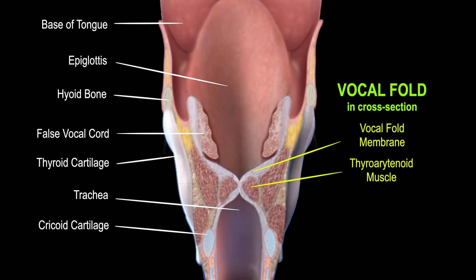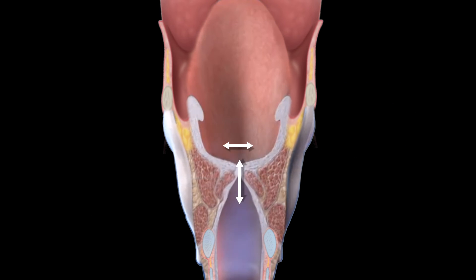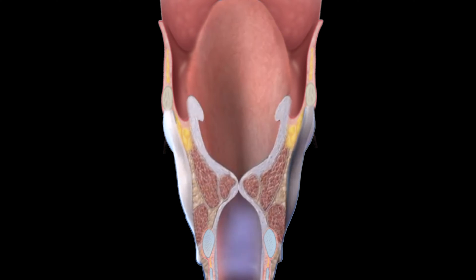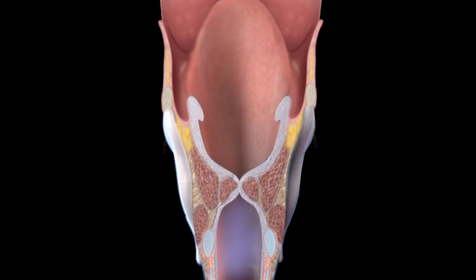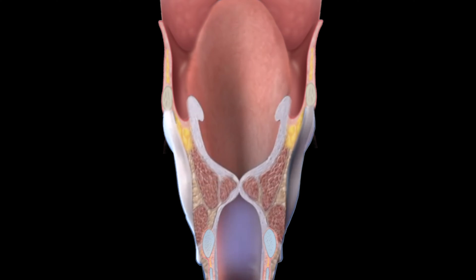Furthermore, when the vocal folds vibrate against each other, there is both a horizontal and vertical component. With phonation, the thyroarytenoid muscle first sets the vocal folds into a closed position. The vocal fold vibration itself is then due to the vocal fold membrane that overlies and moves freely over the muscle.